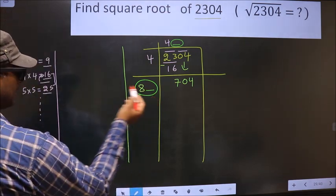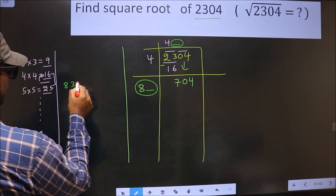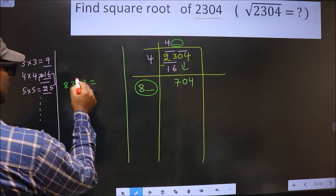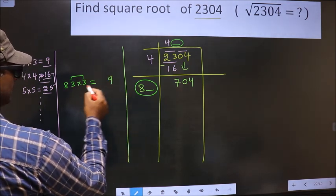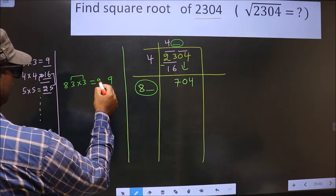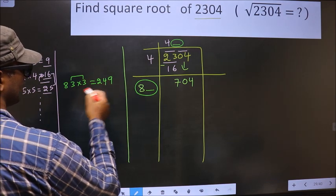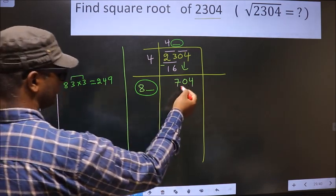If I take 3. 83 into 3. These 2 numbers should be same. 3 into 3, 9. 3 into 8, 24. So we got 249 is far from this.